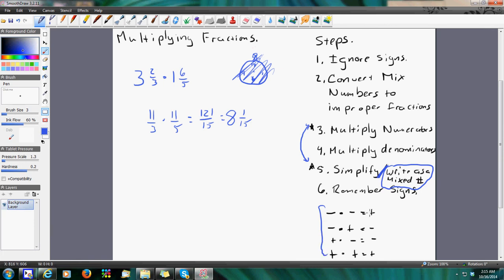Just remember, negative times negative is positive. Negative times positive is negative. Positive times negative is negative. Positive times positive is positive. If the signs are the same, it's positive. Signs are different, go negative.